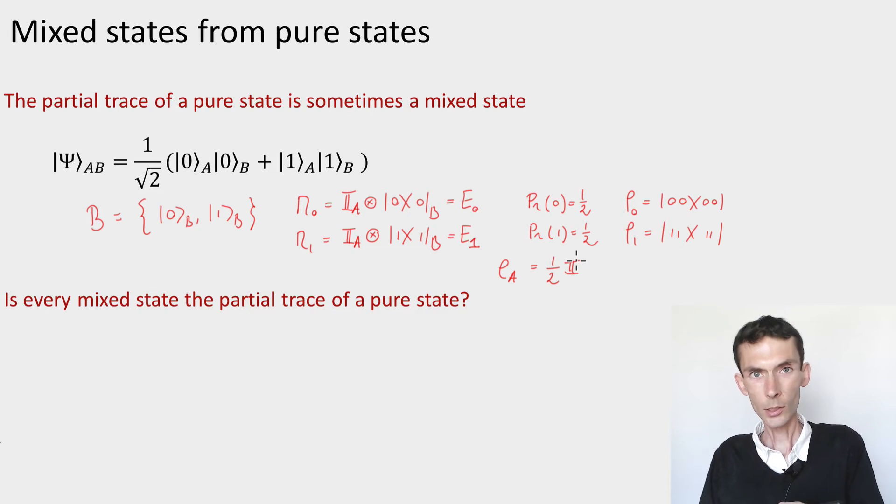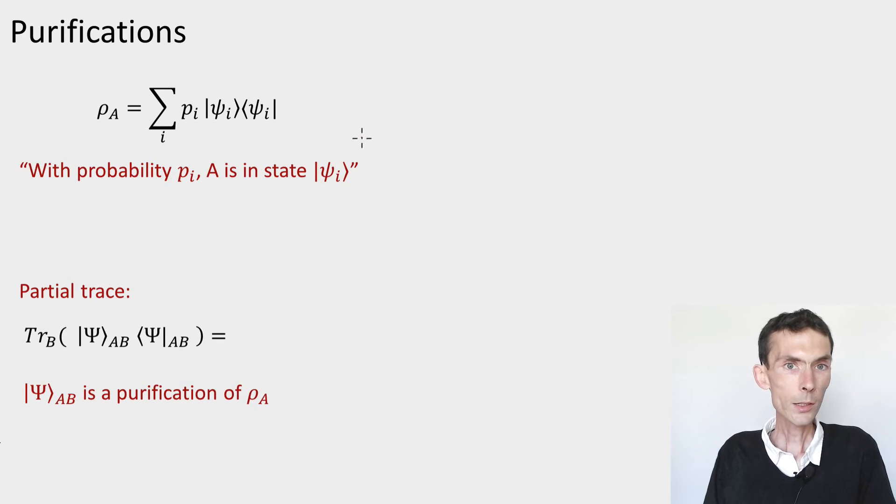The answer is yes, and let's see how that works. So let's take an arbitrary density matrix rho A. We know that we can write it as a mixture with here some coefficients pi that are non-negative and sum to 1. These are the eigenvalues of the reduced density matrix, and the psi i, which are the eigenvectors.